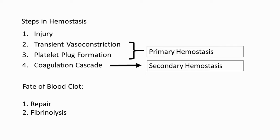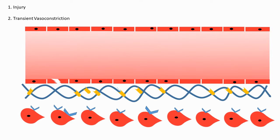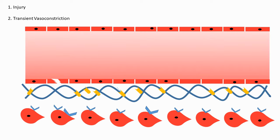Now we'll move into the steps involved in hemostasis. It starts with the injury. Once injury has taken place, it leads to blood loss. Blood vessels initially try to minimize blood loss by constricting — known as transient vasoconstriction. Vasoconstriction following injury takes place mainly through two mechanisms. Earlier, we mentioned that endothelial cells release nitric oxide and PGI2 to maintain the anticoagulant state.